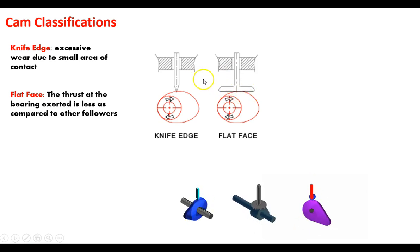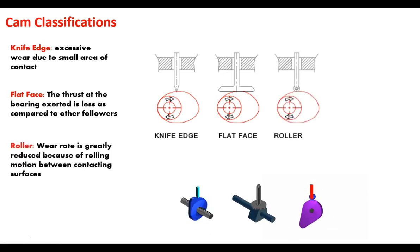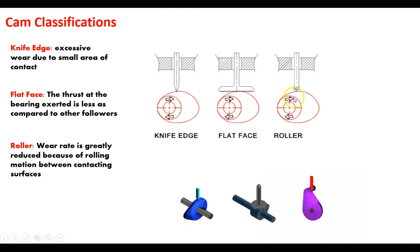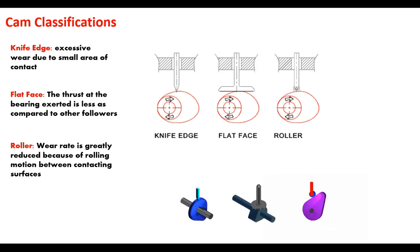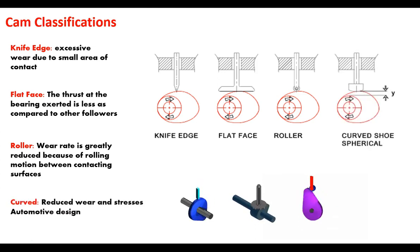The gentleness or abruptness of the rise and fall of the follower changes with the flat face. Then you've got the roller follower, which is what we saw in a few of the other animations — an actual wheel riding over the cam. It has a much lower wear rate because of that rolling contact, which takes away friction, similar in purpose to a bearing.